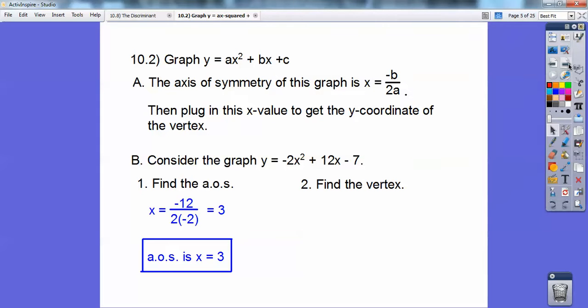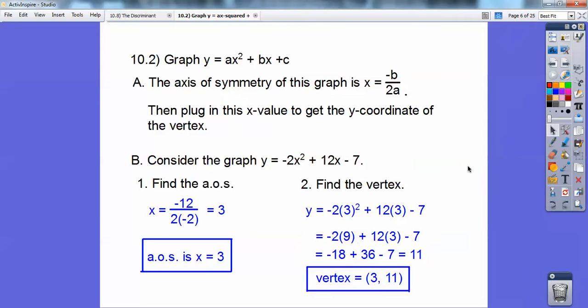To find the vertex, I'm going to plug in x equals 3 right here, 3 right there for the 3 squared, and then 3 right there next to the 12. So here we go. I crank that out, and I get 11, so the vertex is at 3, 11.